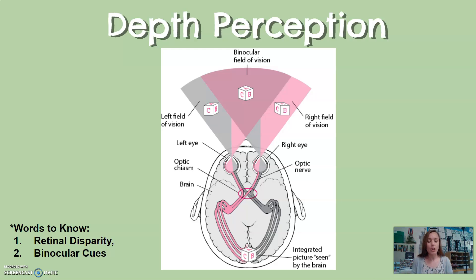This is called a binocular cue. A binocular cue is where you use two eyes — binocular meaning two eyes — to pick up cues about depth.